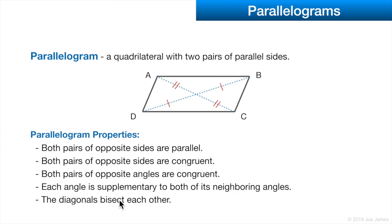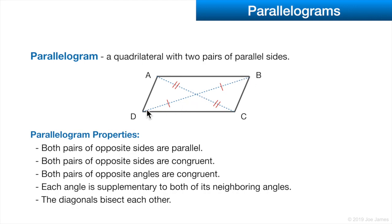Lastly, the diagonals bisect each other. The diagonals intersect at the midpoint, so the segments on either side of that midpoint are the same length. That doesn't mean the two diagonals are the same length — diagonal BD is clearly longer than the other.